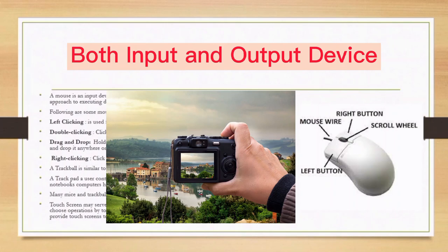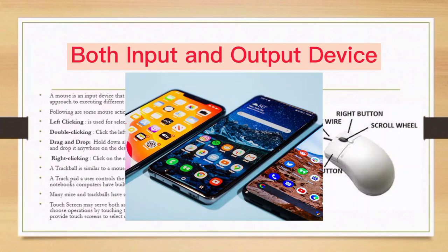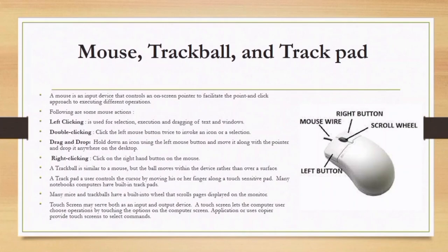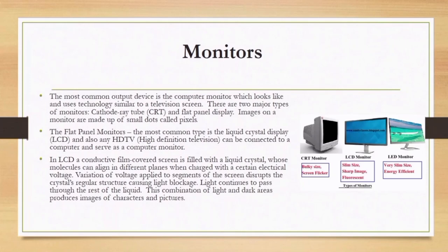Examples of input/output devices include a digital camera and a smartphone. The most common output device is the computer monitor, which uses similar technology to that of a television screen. There are two types of monitors: the CRT (cathode ray tube) and the flat panel display, also called LCD or LED. Images on monitors are made up of small dots called pixels.